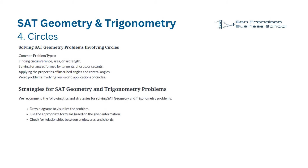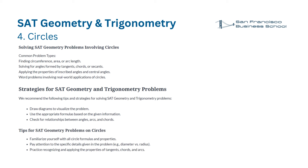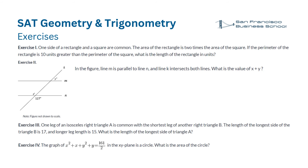Strategies for SAT geometry and trigonometry problems: draw diagrams to visualize the problem; use the appropriate formulas based on the given information; check for relationships between angles, arcs, and chords. Tips for circle problems: familiarize yourself with all circle formulas and properties; pay attention to specific details such as diameter versus radius; practice recognizing and applying the properties of tangents, chords, and arcs.